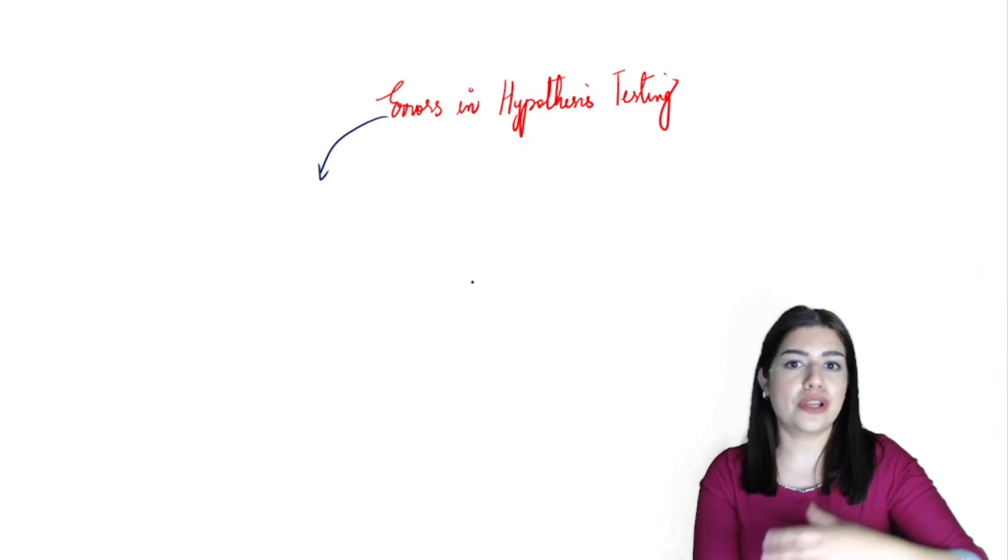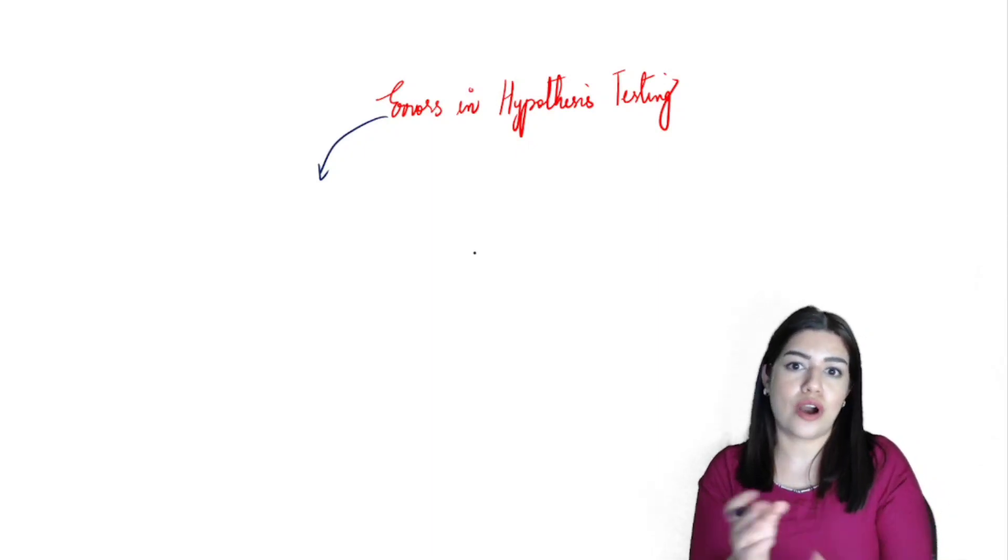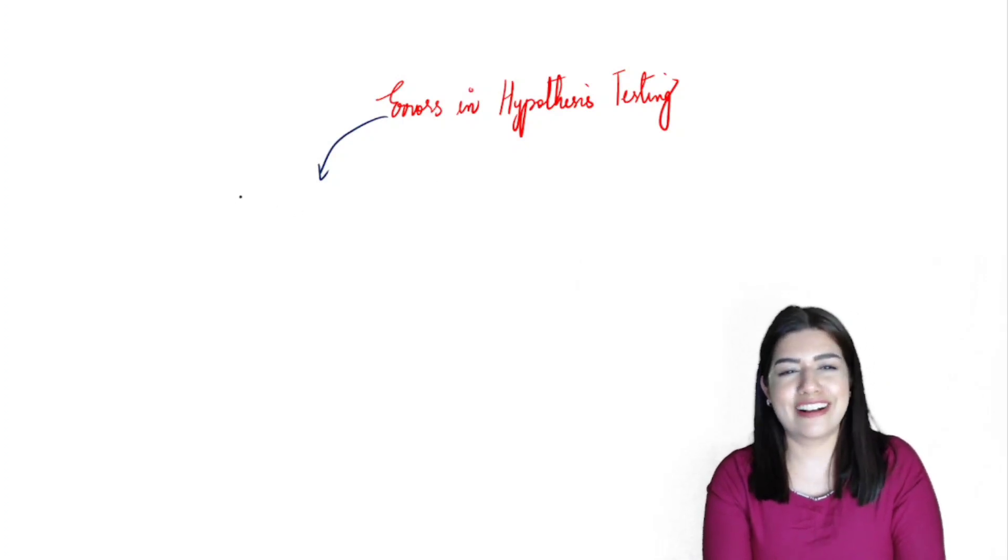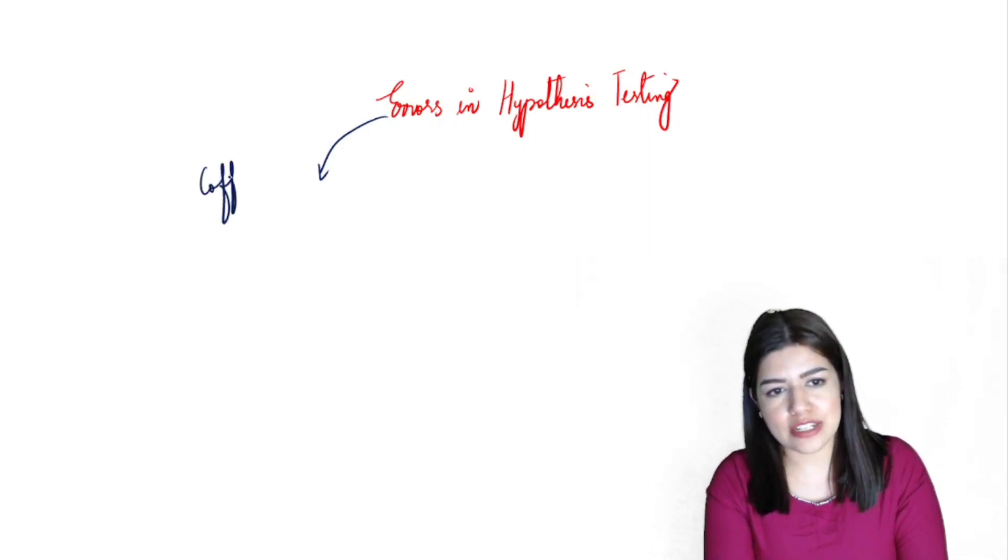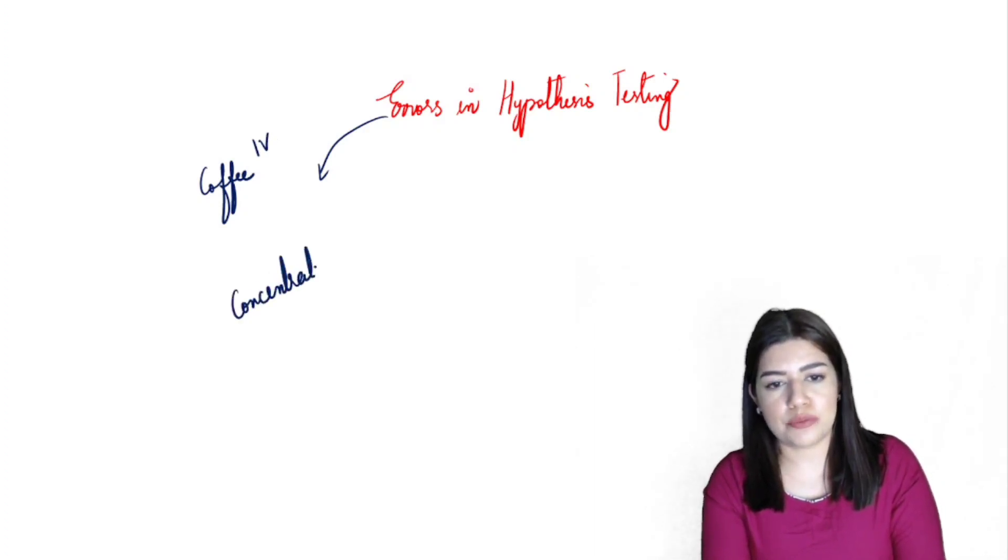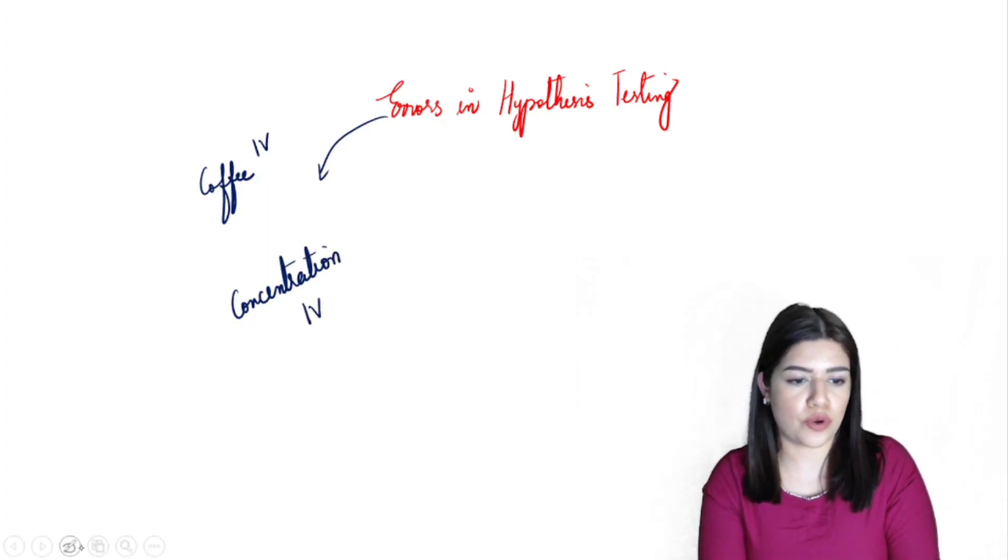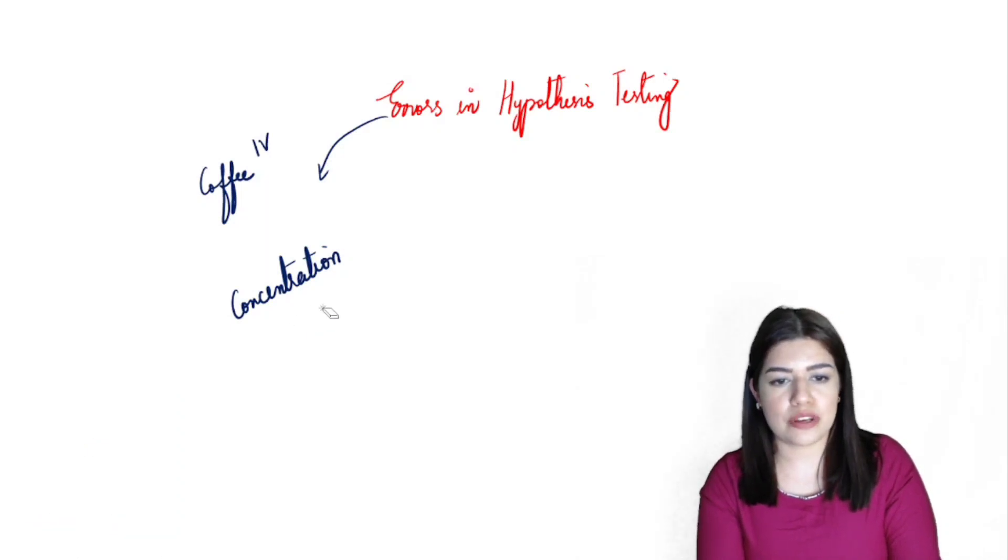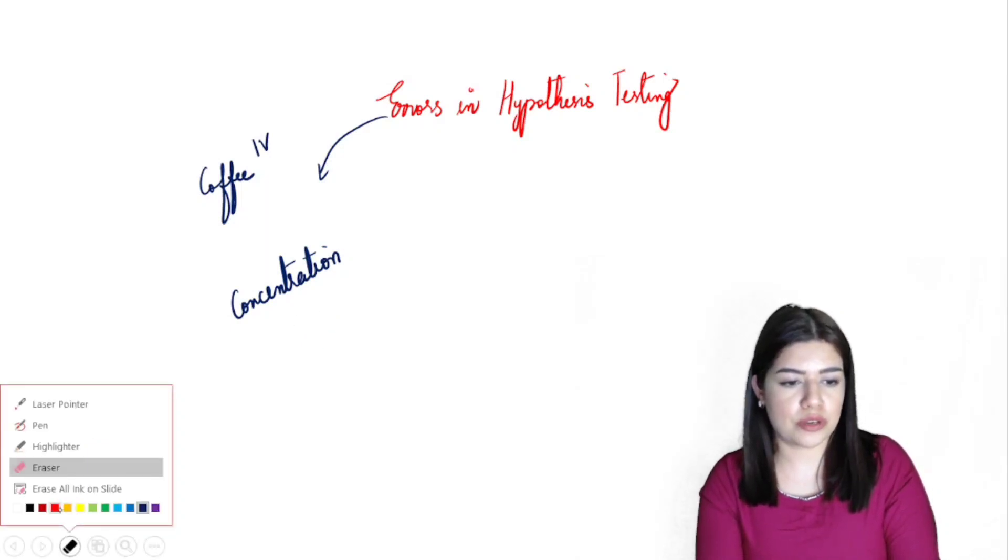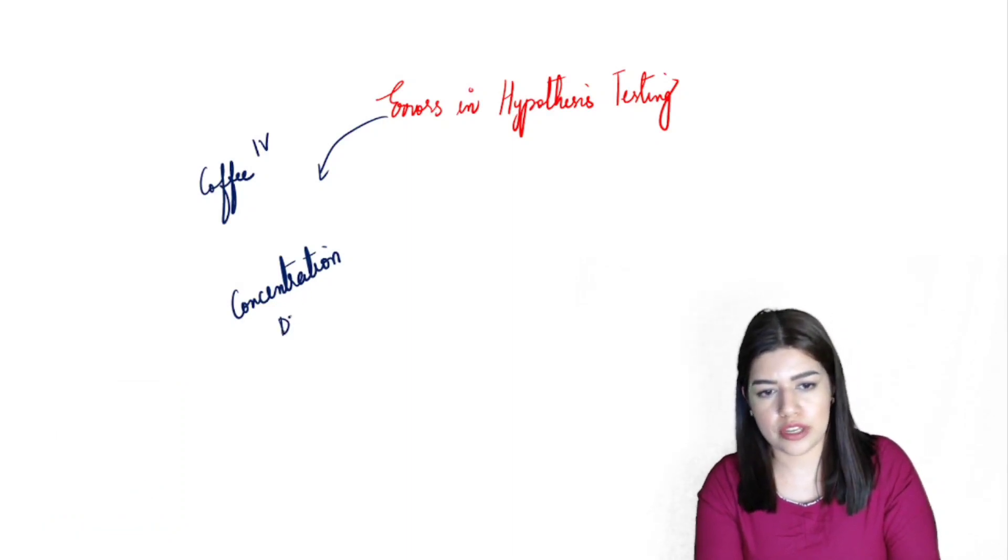We'll take an example and break it down into how we may commit an error. All of my students will know that my favorite variable forever is coffee. Let's take coffee as our independent variable and concentration as our dependent variable. Please watch the video on higher resolution so that whatever I'm writing is clear for you.